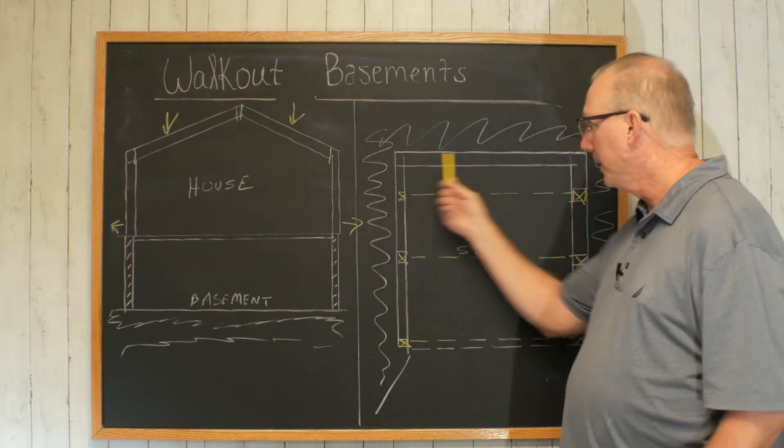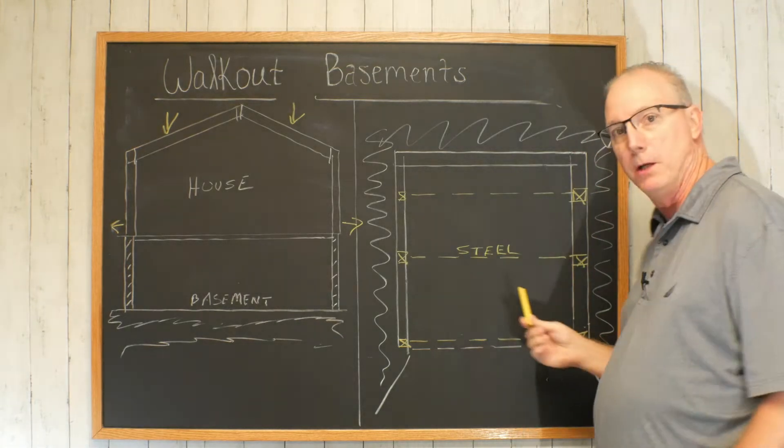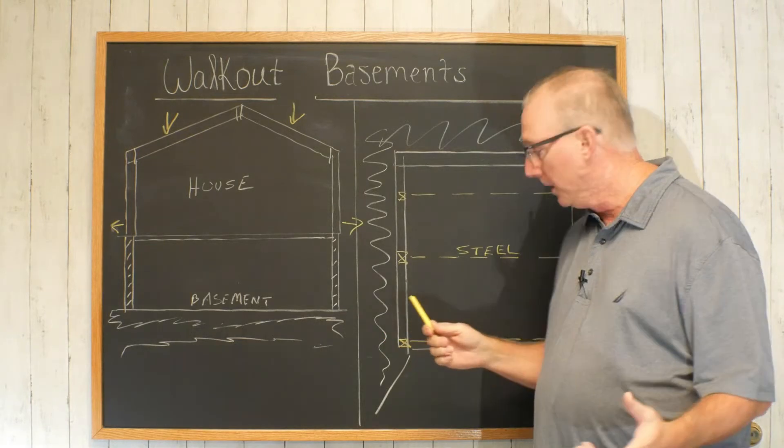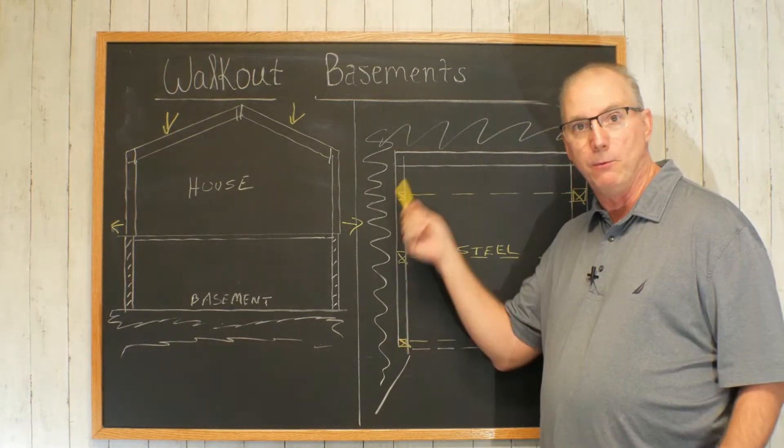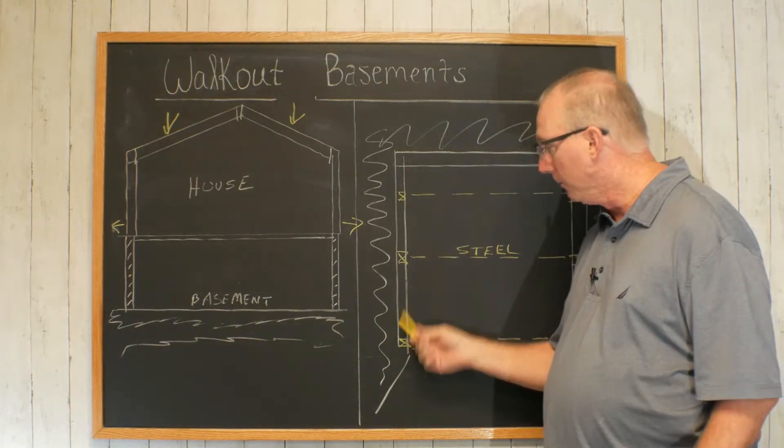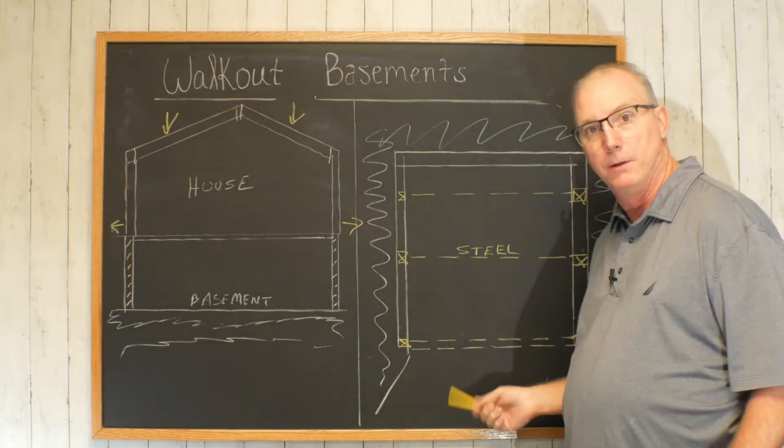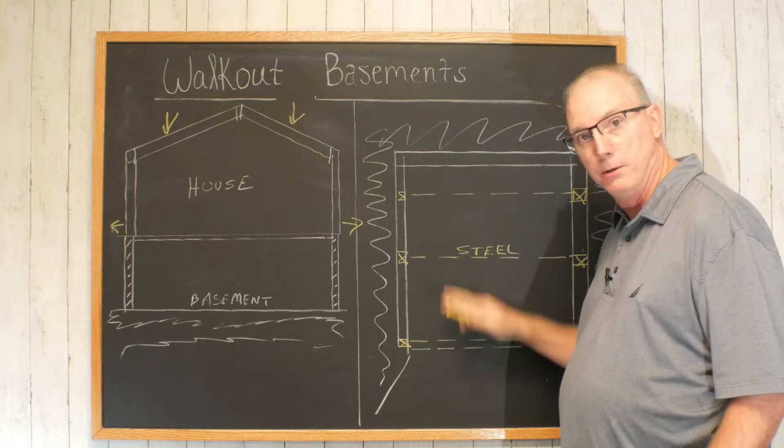What you have is three sides of some sort of concrete wall, and we can talk about that in a minute. But we basically have three walls below grade—one, two, three. And then we have this open, so you're built into your hill here.